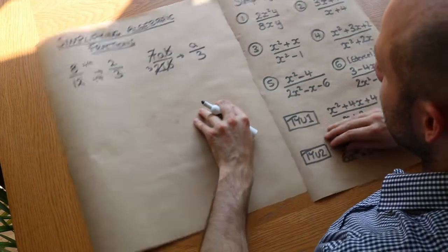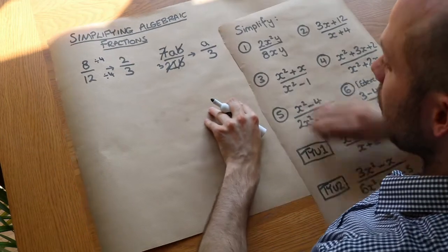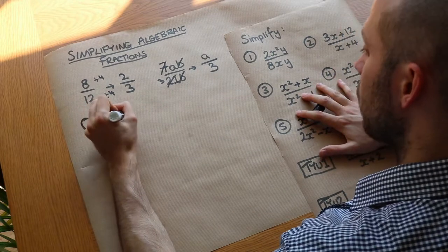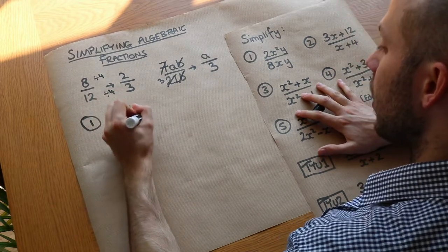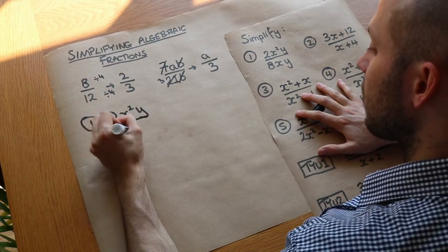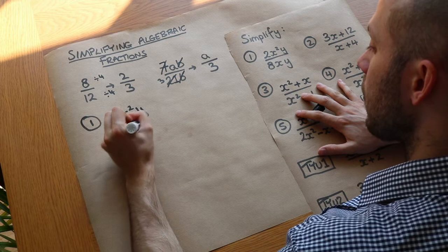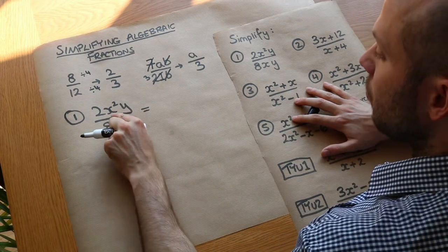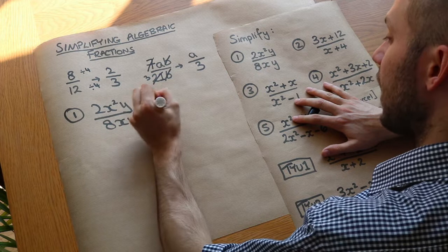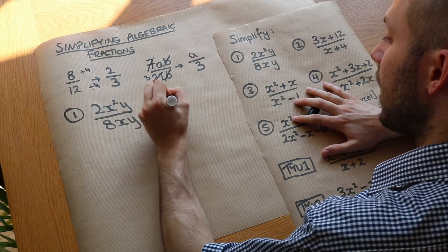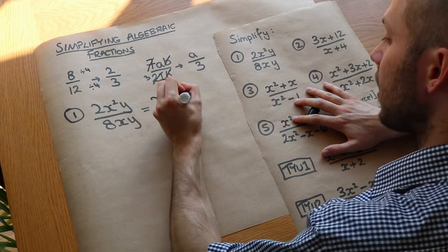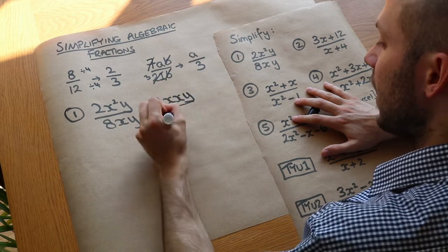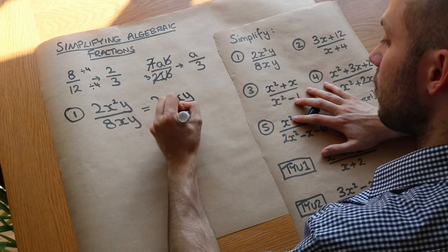Now let's do a bunch of examples. We've got firstly 2x squared y over 8xy. You don't have to do this, but it might be helpful to write x squared as x times x, because that's just going to make it slightly easier to see what cancels.